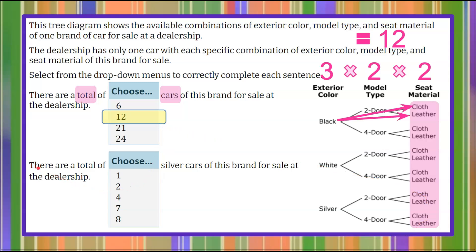Now let's look at the second statement. We want to know the total of silver cars. So now we're going to come over and we're just going to focus on the silver in the tree diagram. So again silver is going to go two-door cloth, two-door leather, four-door cloth, silver four-door leather. So we can see that these four outcomes are the four silver cars on the lot and that there is a total of four silver cars of this brand for sale at the dealership.